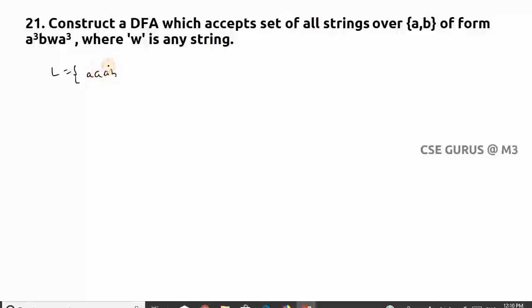So what is the language? Three a's should be there, then b, then you can have anything (it may be epsilon), then a³ means three a's. You can have triple a, b followed by anything, that means a single a or a b then followed by three a's like this. Our constraint is initially you need to have three number of a's followed by b, then you can have anything, and then ending with three a's.